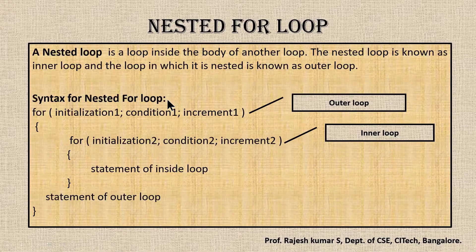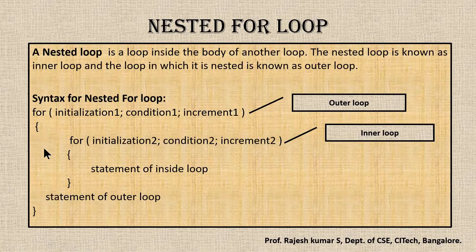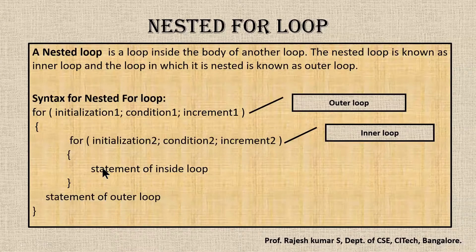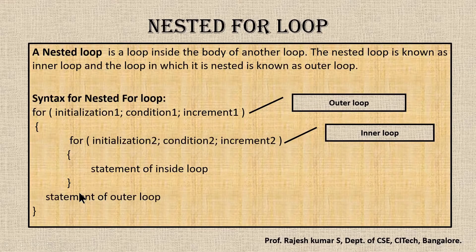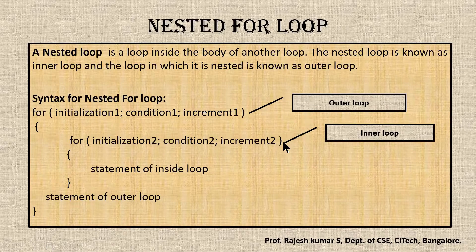The syntax of nested for loop is as shown in the diagram. We have an outer for loop with open and closed braces. Inside this outer for loop, we place one more for loop with its own open and closed braces. The statements inside the inner braces belong to the inner for loop, and statements outside belong to the outer for loop.